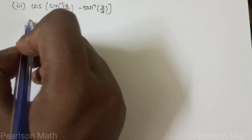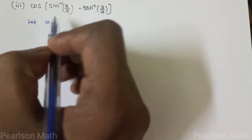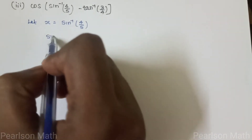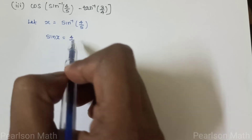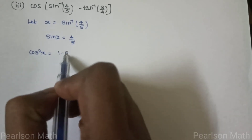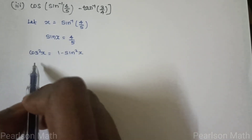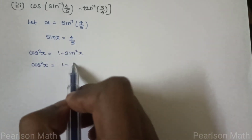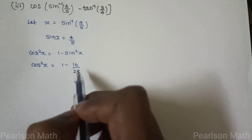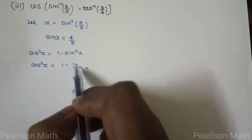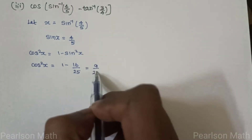Third subdivision: cos of sin inverse of 4/5 minus tan inverse of 3/4. Let x equal to sin inverse of 4/5, so sin x equals 4/5. Applying the identity sin squared x plus cos squared x equals 1, we get cos squared x equals 1 minus 16 by 25, so cos squared x equals 9 by 25, giving cos x equals 3 by 5.